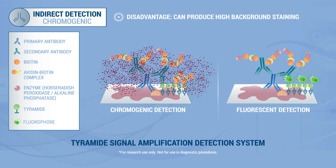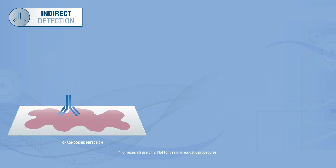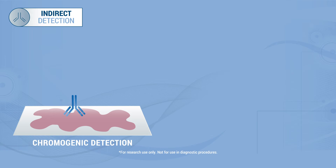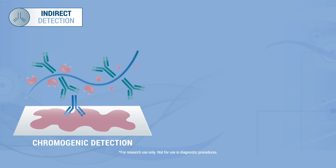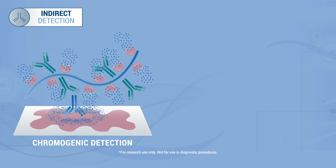The disadvantages with biotinylated and tyramide detection systems can be high background staining due to binding with endogenous biotin within tissue samples. Another detection option is to use polymer-based detection systems that can enhance the signal intensity. In these detection systems, secondary antibodies and many enzymes are conjugated to a polymer-based backbone, which results in increasing the amount of chromogen precipitation at the site of the primary antibody.